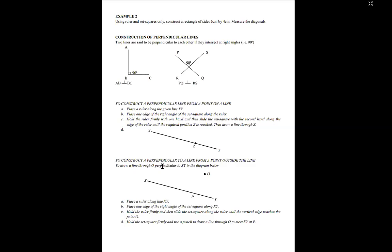To draw a line through O perpendicular to XY: Step 1 — place a ruler along XY. Step 2 — place one edge of the right angle of the set square along XY. Step 3 — hold the ruler firmly and slide the set square along the ruler until the vertical edge reaches point O, then hold the set square firmly and use a pencil to draw a line through O to meet XY at point P.